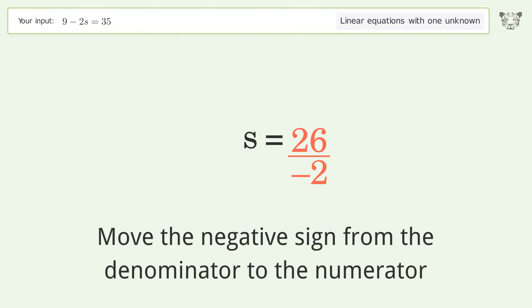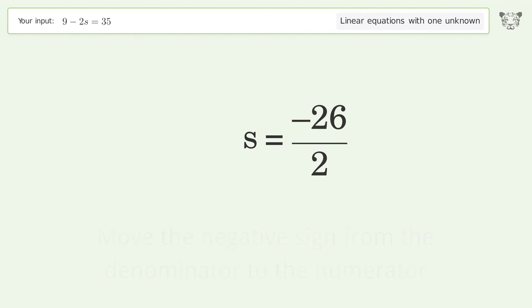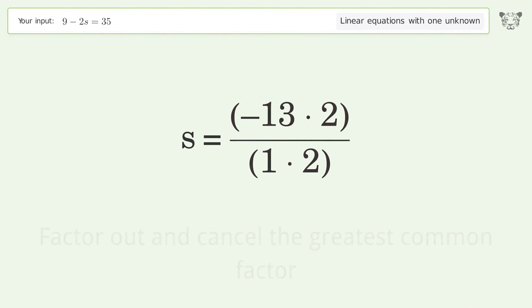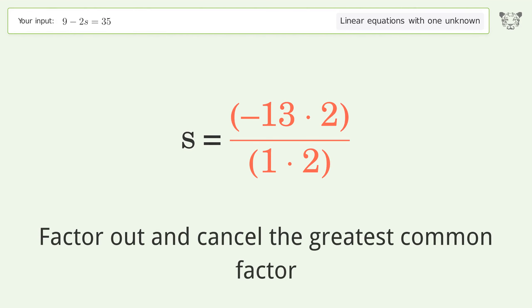Move the negative sign from the denominator to the numerator. Find the greatest common factor of the numerator and denominator. Factor out and cancel the greatest common factor.